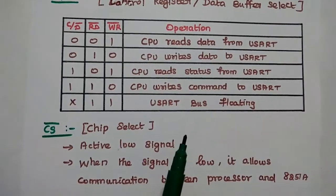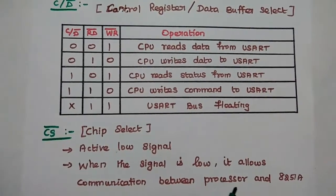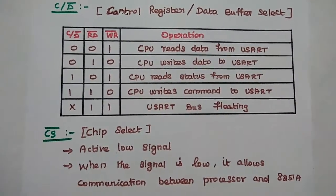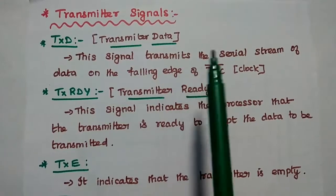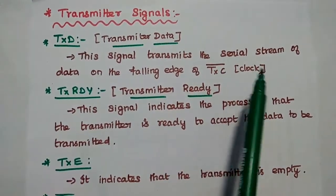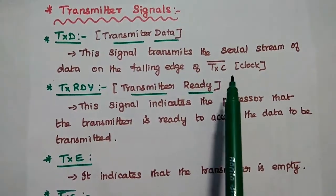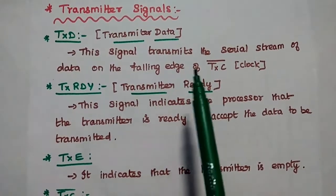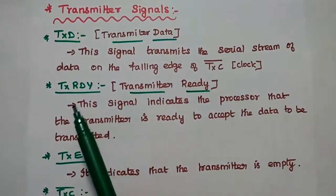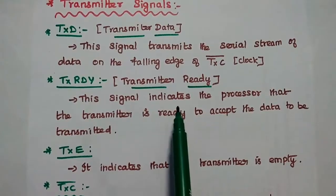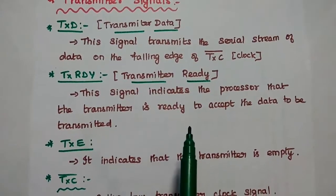The chip select signal is an active low signal. When it is low, it allows communication between the processor and the 8251A. The TXD (transmitter data) signal transmits the serial stream of data on the falling edge of the transmitter clock signal. The transmitter ready signal indicates to the processor that the transmitter is ready to accept data to be transmitted.